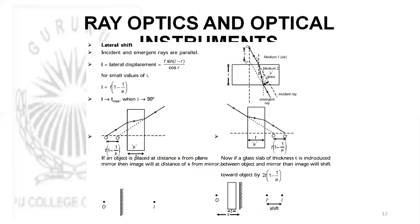Coming to lateral shift: when there is a sideways displacement of an incident ray passing through a parallel-sided glass slab, the shift is called lateral shift. The formula for lateral shift is T * sin(I minus R) / cos R, where T is the thickness of the slab, I is the angle of incidence, and R is the angle of refraction. For small values of I, the lateral shift is given by T * (1 minus 1/mu).